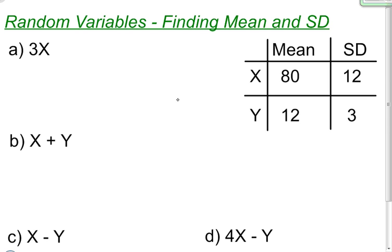This is a quick example of how to find the mean and the standard deviation when you are manipulating or combining random variables. Here I have a table that gives me the mean and the standard deviation for two separate variables. Random variable x has a mean of 80 and a standard deviation of 12, and random variable y has a mean of 12 and a standard deviation of 3.